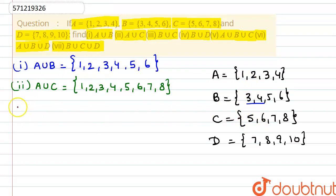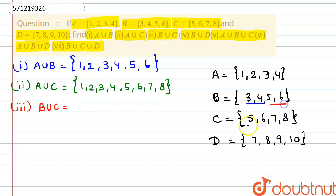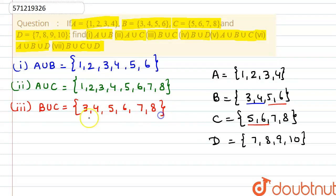Next, if we go on to the third part, we have B union C. In these two sets, we can see that 5 and 6 are repeating, so we don't have to write them twice. So B union C will be {3, 4, 5, 6, 7, 8}. This is our set B union C.